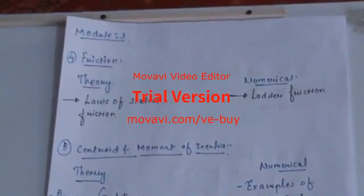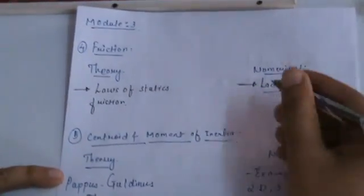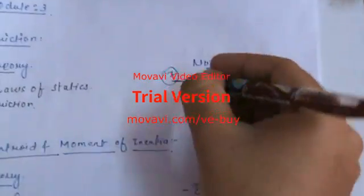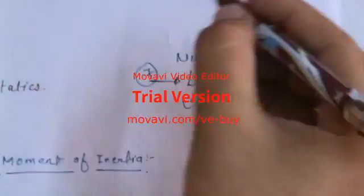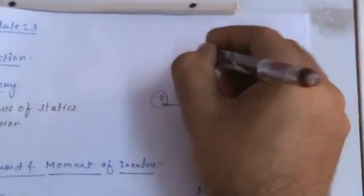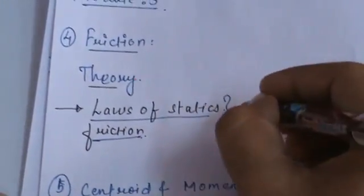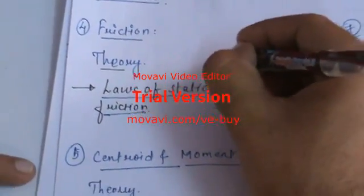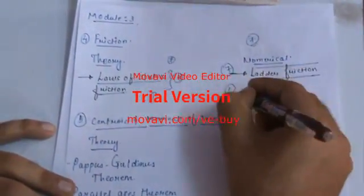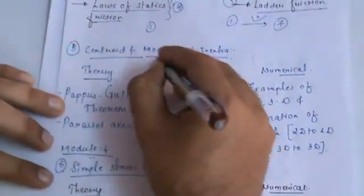In Module 3, you can expect one question from friction. GTU consistently asks a sure-shot sum from ladder friction, which involves only 2 to 3 main formulas, making it easy to solve and earn 7 marks. For the theory portion, only laws of static friction is asked, worth up to 4 marks. With preparation of one theory and one numerical practice, you can easily get the full 7 marks from this chapter.